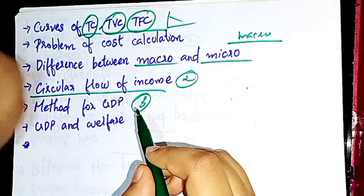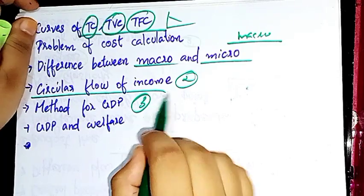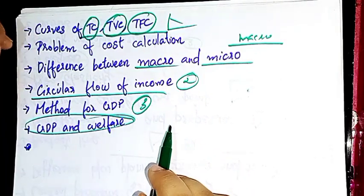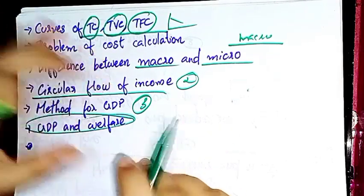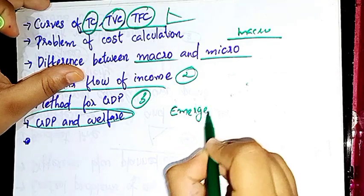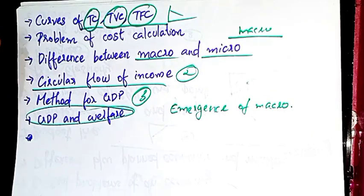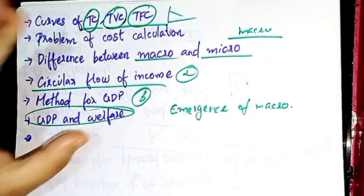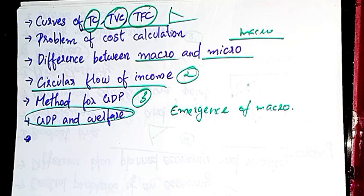Then the third method is to calculate GDP: income method, product method, and expenditure method. The third method is to calculate GDP and welfare. You need to leave your questions in the comment box. If you have any other method, you need to learn that as well.